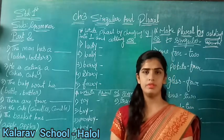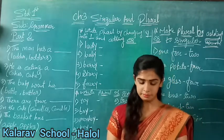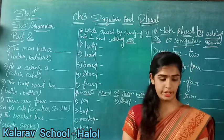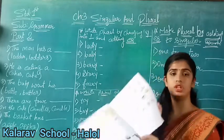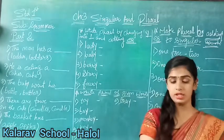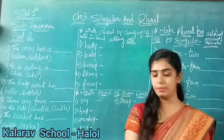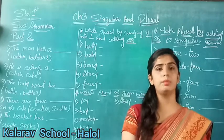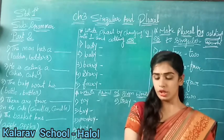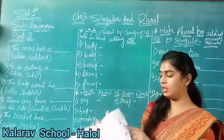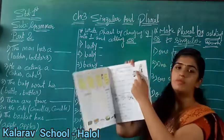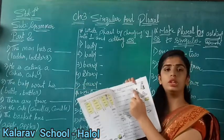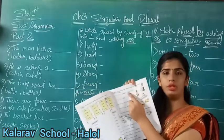First of all, take out your grammar book. Have you opened it, children? Now see here on page 13 - your first exercise is: look at each picture and fill in the correct form of a noun in the blanks. You have been given pictures; find out the correct noun from the bracket.